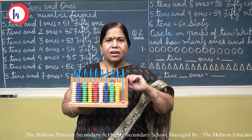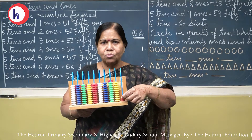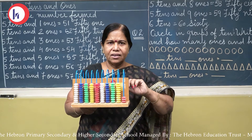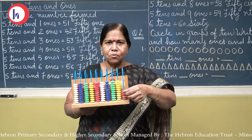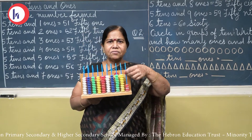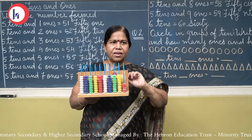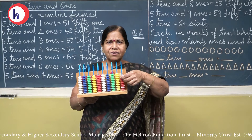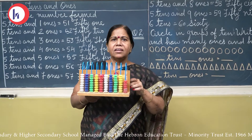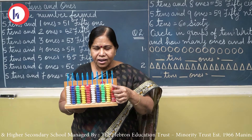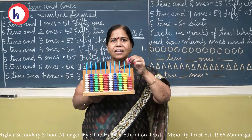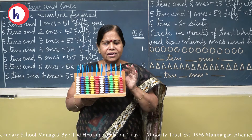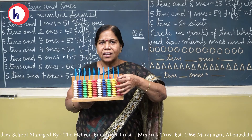Now 6 tens means 60. Now 6 tens and 1 — which number will form? 61. 6 tens and 2 — 62. 6 tens and 3 — 63. 6 tens and 4 — 64. 6 tens and 5 — 65. 6 tens and 6 — 66. 6 tens and 7 — 67. 6 tens and 8 — 68. 6 tens and 9 — 69.